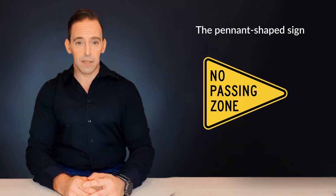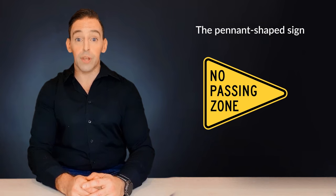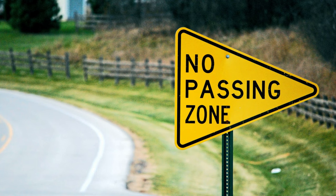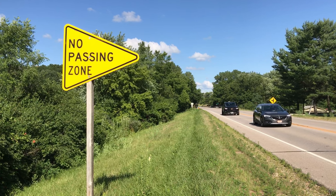Then we have the pennant. Pennant shaped signs always indicate a no passing zone. These signs are common on rural roads with two-way traffic. No passing zones are usually placed in areas with limited visibility where passing is dangerous.